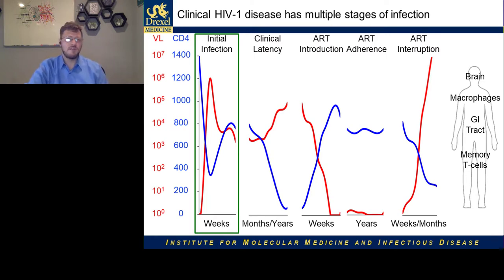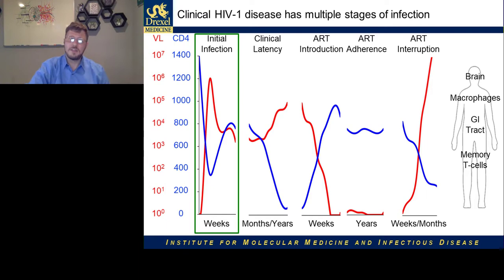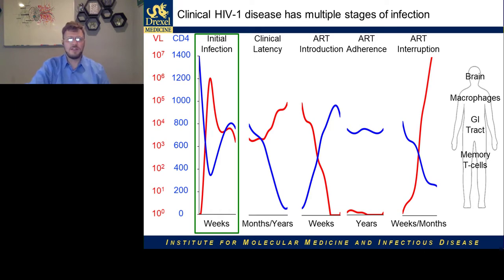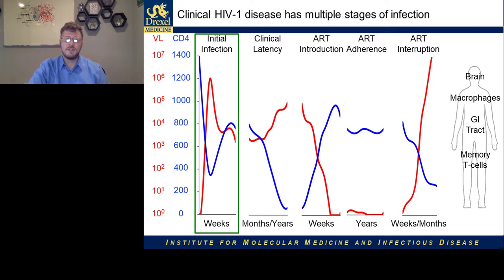However, their immune system will often recover over the course of a few weeks, and they may not even realize they've been infected. Over the course of months to years, they'll enter a period of clinical latency in which the virus slowly depletes the white blood cell population. This is often when they come to the doctor, and the introduction of antiretroviral therapy will, within weeks to months, reduce the viral load back down to near undetectable levels and allow the white blood cell count to recover. However, if they ever interrupt their medication, the virus will rapidly rebound, because during the initial weeks of early infection the virus seeded anatomical reservoirs like the brain and the GI tract, as well as circulating cells like macrophages and memory T cells.